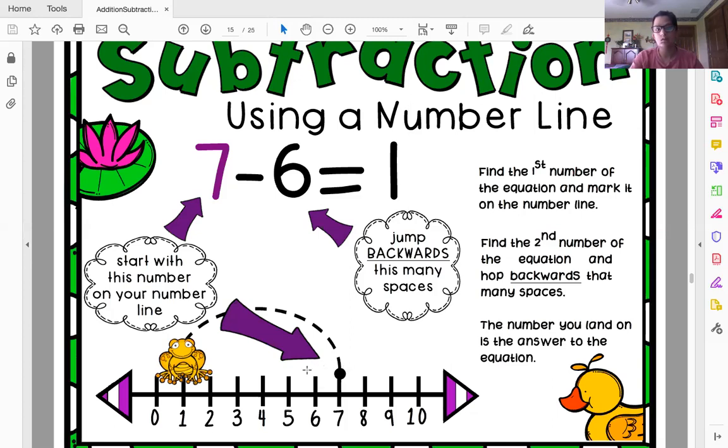One, two, three, four, five, six. Six. I ended at one. Six. So seven minus six is equal to one. The number you land on is the answer to the equation. Very good. So now we're going to practice what we just learned.